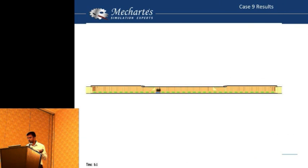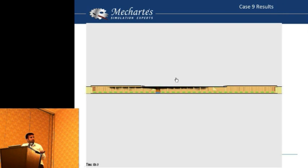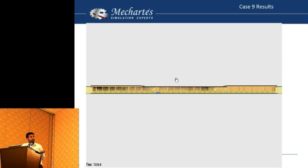Above 2.8 meters from the ground was the smoke layer height, and below that the visibility was quite good — apart from one corner area which was not of much concern, as not many people would be there. It took about 10 minutes for smoke to reach that area. This was a good design and was finally implemented in the metro.